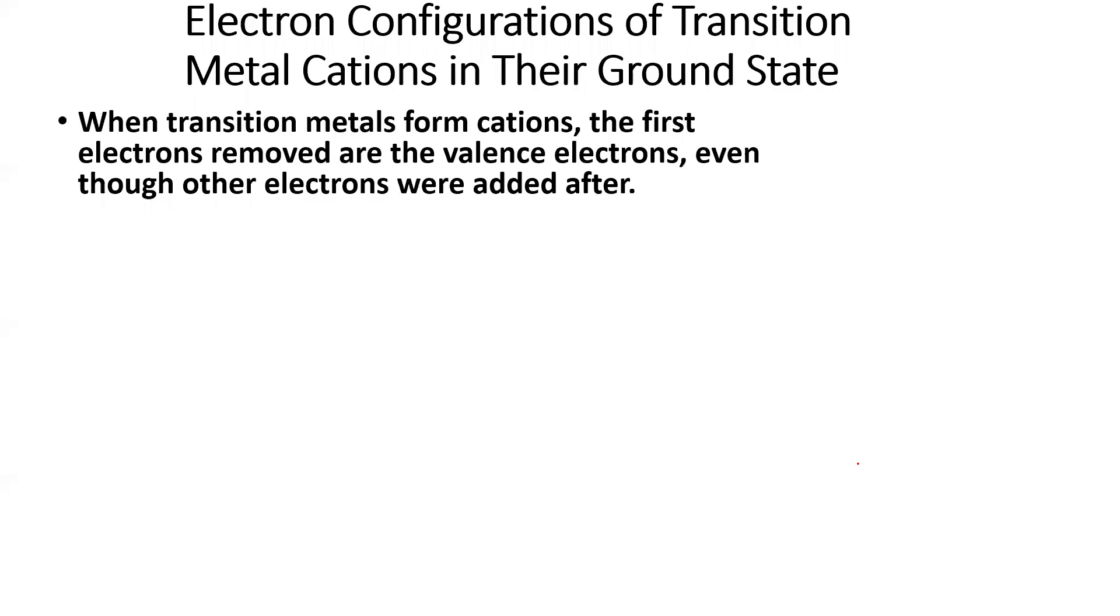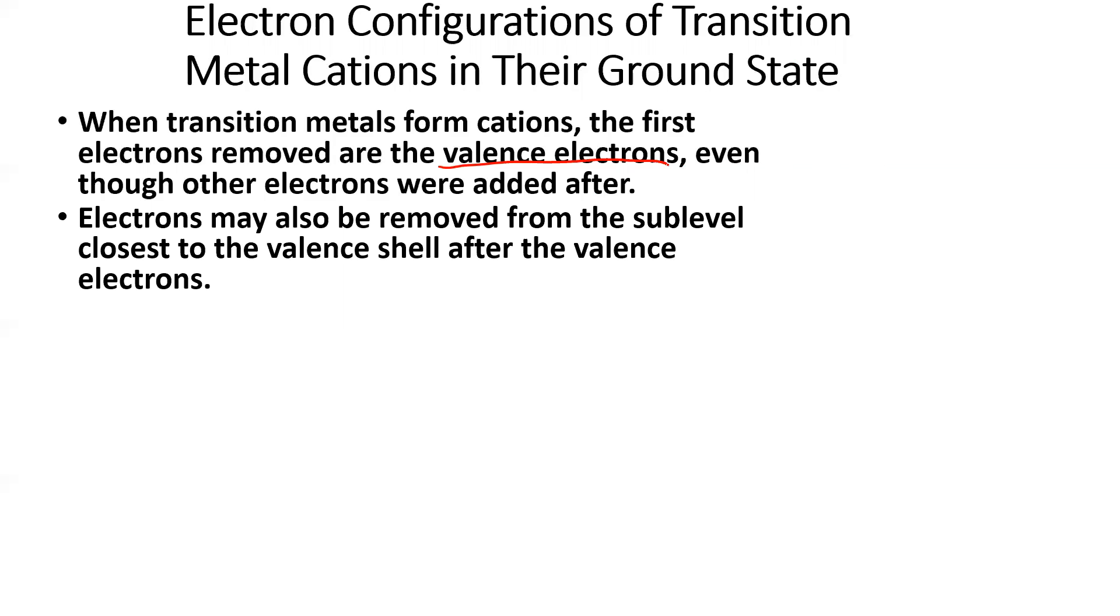So now what about the weirdness with electron configurations of transition metals when they form cations? So when you're forming cations, you're losing electrons. So with transition metals, we have to realize we're actually going to remove the electrons from the valence shell. The valence shell being the outermost energy level. Or you can think about it as the principal quantum number that is the largest. So 4 would be bigger than 3. So even though you filled those 4s electrons first, you remove those when you form your cations. So what am I talking about? Let's take a look.